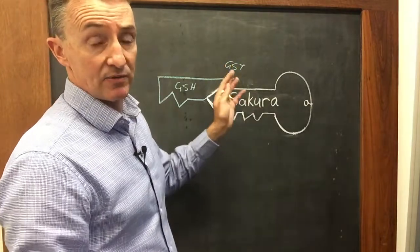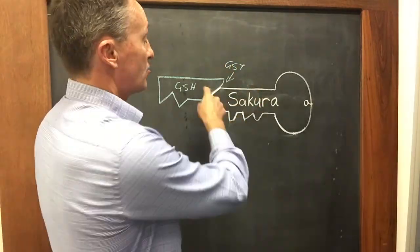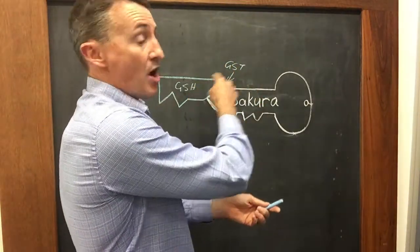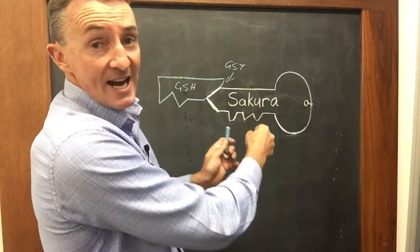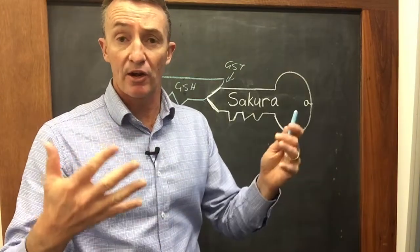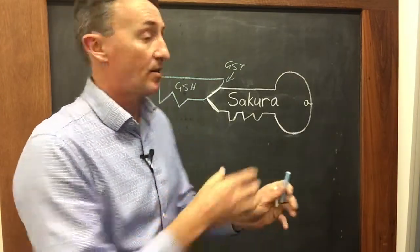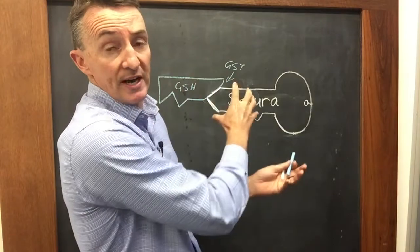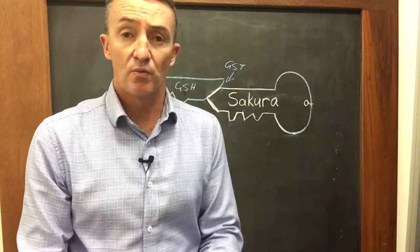GST, as I said, stands for glutathione S-transferase. It transfers a glutathione onto the molecule. Now we have a really big molecule and obviously it can no longer bind to the enzyme because it's got this great big glutathione hanging off it. But that's not where it finishes.